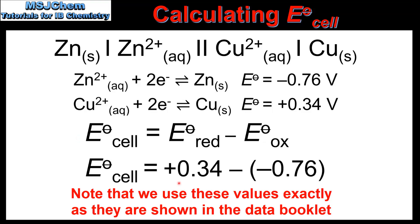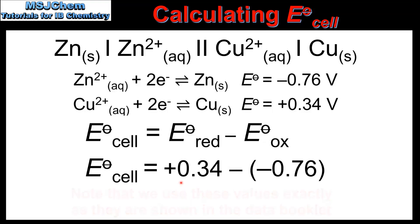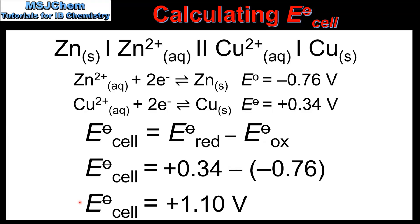The copper half cell has the more positive standard electropotential value, so it undergoes reduction — in other words, it will be the cathode. Here we have the cell potential for this voltaic cell, which is positive 1.10 volts.